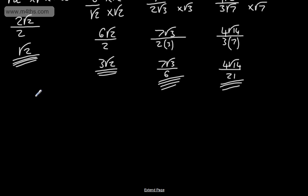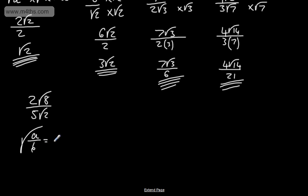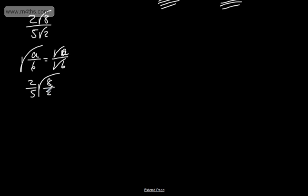Let's do another: 2 root 8 over 5 root 2. One approach is to use the rule that root A over B equals root A over root B. We can split this as 2 over 5 times root 8 over root 2, which is root 4, and the square root of 4 is 2. So we get 2 fifths times 2, which gives 4 over 5. Alternatively, multiply numerator and denominator by root 2: we get root 2 times root 8 which is root 16, and 5 times root 2 times root 2 which is 10. That gives 2 times 4 over 10, and the 2s cancel to give 4 over 5.